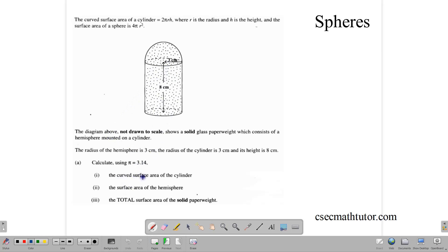So the first part is to calculate the surface area of the cylinder. And let's do that calculation using the formula given, 2πrh.